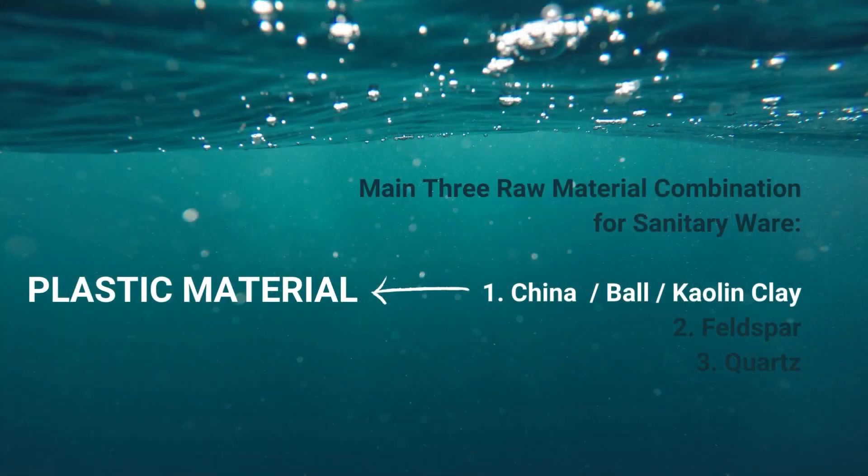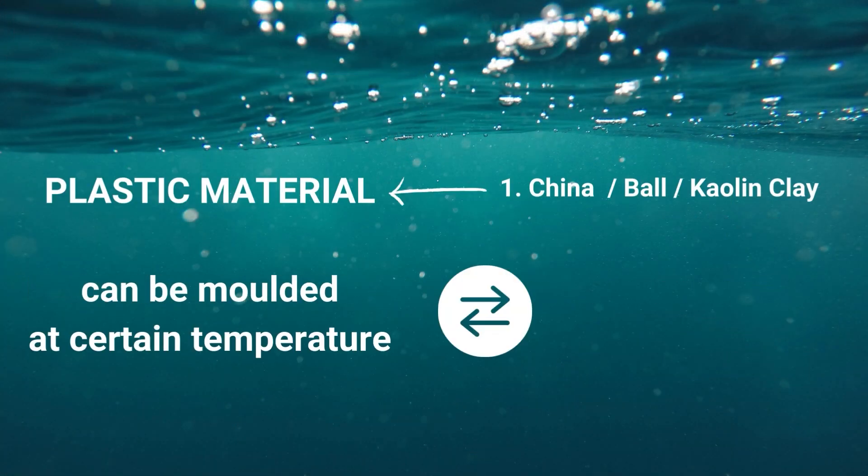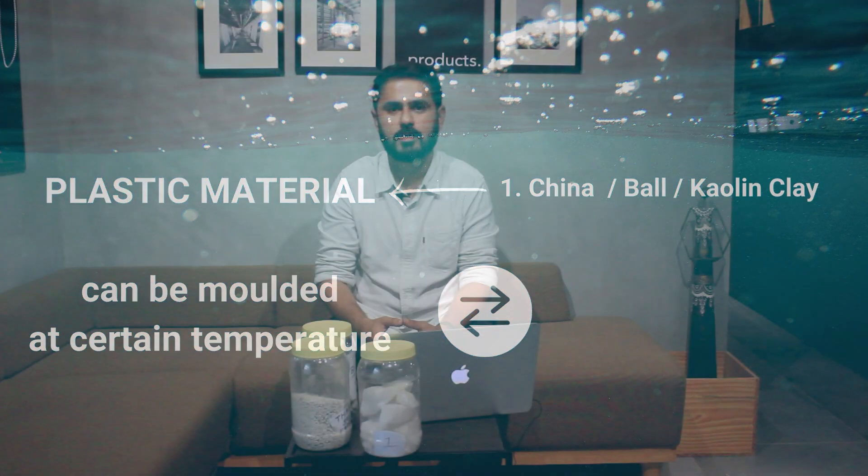In terms of the clay — china clay, kaolin clay, and ball clay — all of them are plastic materials. What we mean by plastic material is that when it reaches a certain temperature, it shows physical deformation and you can mold or shape it, and it can hold that shape when cooled back down to normal room temperature.